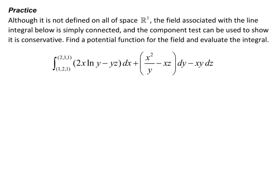Our practice problem says: although it is not defined on all of space R3, the field associated with the line integral below is simply connected, and the component test can be used to show it as conservative. Find a potential function for the field and evaluate the line integral. We have the line integral from (1, 2, 1) to (2, 1, 1) of 2x natural log of y minus yz dx, plus x squared over y minus xz dy, minus xy dz.